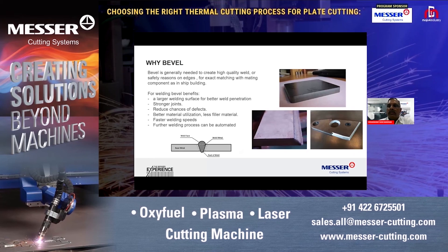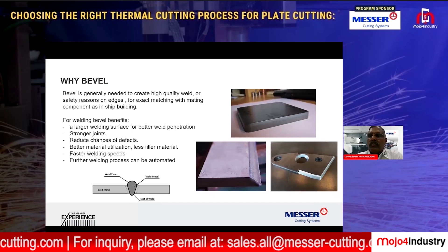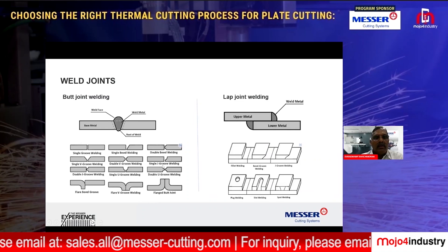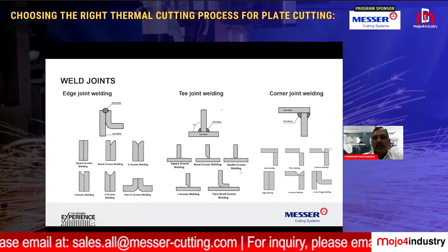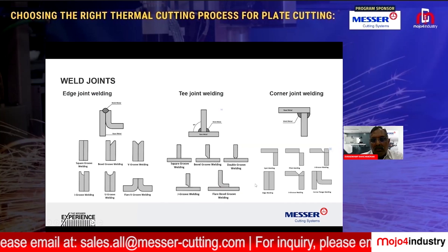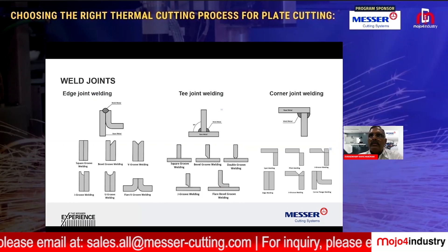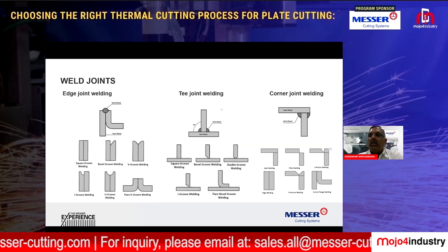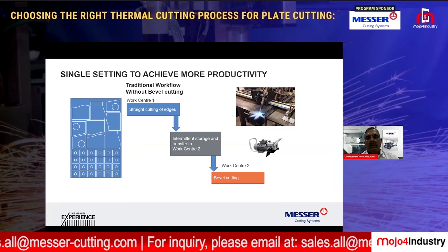Mr. Avichandran explains that bevel cutting is needed when thick material is cut and taken for fabrication, where you need to prepare edges for welding. It ensures better finish, better weld strength, and faster welding — especially when thickness is greater than half an inch. Bevel preparation applies to butt welding joints, lap welding joints, edge welding, T-joints, and corner joints. Precise edge preparation is critical; imprecise beveling will not serve its purpose.